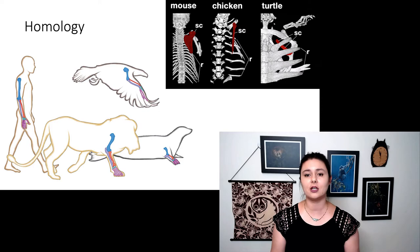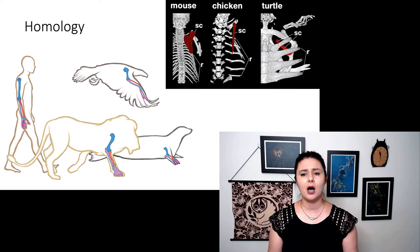Here, we're looking at our scapula. Ours is on our back. Looks actually very similar to the mouse here. Though the chicken and the turtle have very different looking scapulas, they are the same bone.